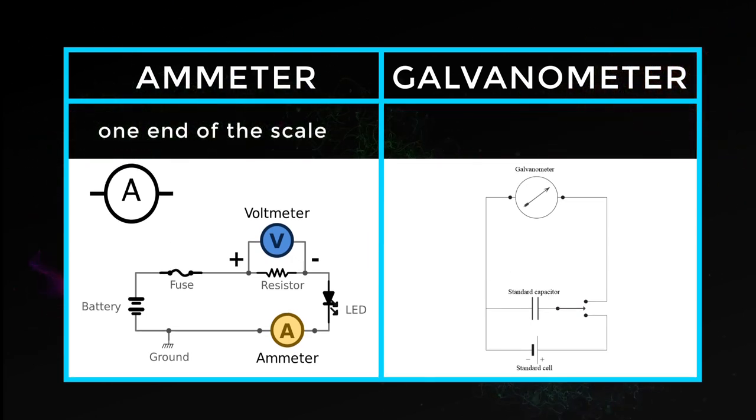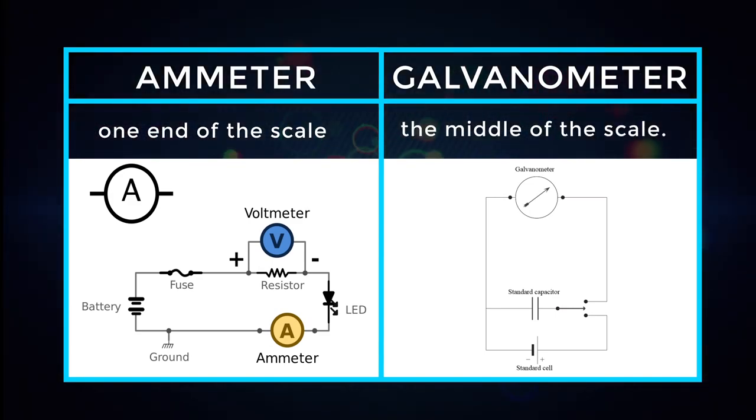The zero division in ammeter is at one end of the scale. The zero division in galvanometer is at the middle of the scale.